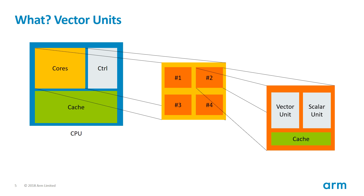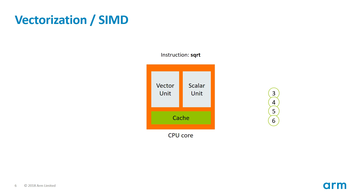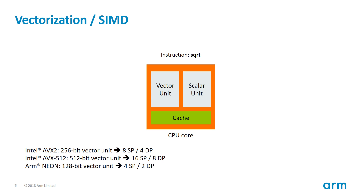Inside a core you will find another level of cache memory and two types of compute units: vector and scalar. As their names indicate, the scalar unit is able to process one element at a time in order to execute an instruction, for example, square root. The vector unit is able to process many elements in a single instruction multiple data, or SIMD, fashion, so the same instruction will be applied to all these elements. Vectorization capability depends on the hardware. For example, Intel Broadwell processors have a 256-bit wide vector unit which can process eight single precision or four double precision elements. Intel Knights Landing processors have a 512-bit wide vector unit which can process 16 single precision or eight double precision elements.